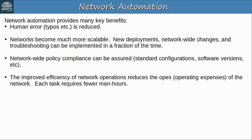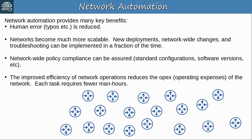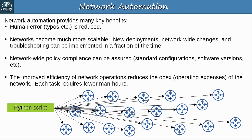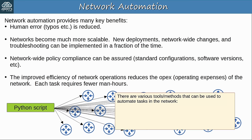For example, in the situation where you need to add a new loopback interface to hundreds of routers, instead of logging into each router one by one and manually configuring a loopback interface — which could take hours — a Python script could perform the task and make the proper configurations in a fraction of the time. There are various tools and methods that can be used to automate tasks in the network, such as SDN, Ansible, Puppet, Python scripts, and many more. For the rest of this video let's focus on the concept of SDN, software-defined networking.